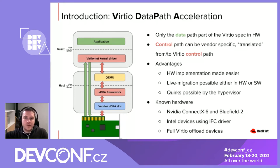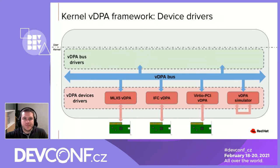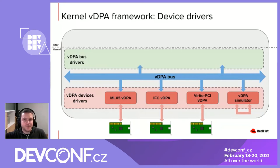Now, let's have a look at the details of the kernel VDPA framework architecture. The core of the framework is the VDPA bus. The goal of this virtual bus is to provide a communication protocol to connect VDPA bus drivers and VDPA device drivers. The VDPA device drivers are registered to the VDPA bus by their parent device driver — for example, in the case of NVIDIA, the MLX5 VDPA devices are registered by the MLX5 core driver. These device drivers implement a set of operations called by the VDPA bus to configure the device, such as callbacks to set and get Virtio features, provide VDPA addresses, VDPA size, etc. This is where the translation from generic Virtio controls into vendor-specific controls happens.